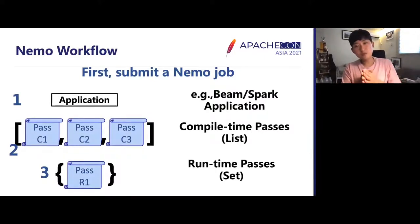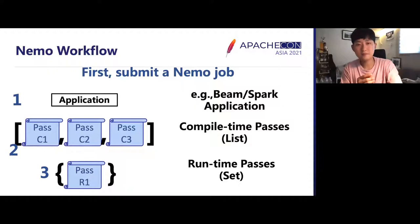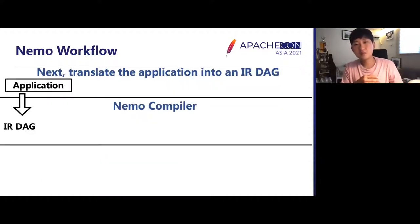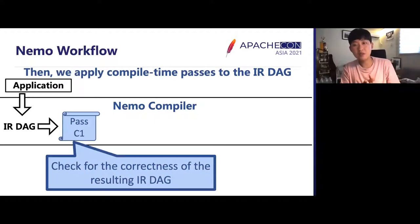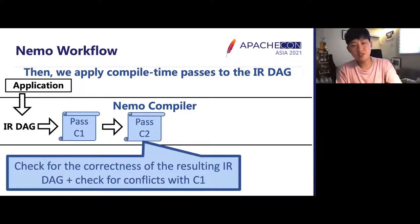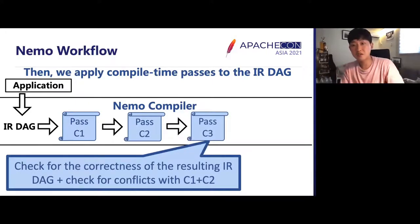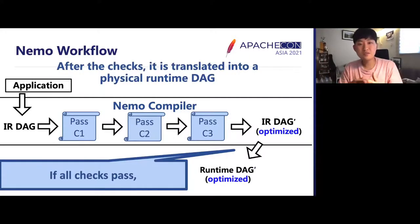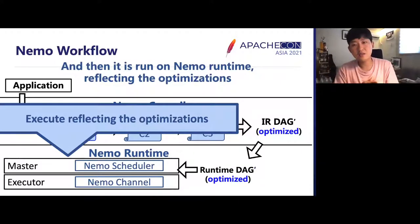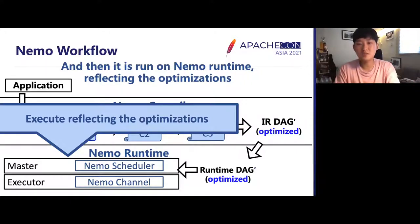A Nemo job requires a Beam or Spark application, a list of compile-time passes, and a set of runtime passes to optimize the application for a specific environment. The application is translated into an IR DAG — an intermediate representation directed acyclic graph — and on that IR DAG, different passes are applied while checking for correctness of the resulting IR DAG. Our sanity checker checks for conflicts and correctness of the optimized IR DAGs. If all checks pass, the optimized IR DAG gets transformed into a physical runtime DAG, which gets scheduled and executed on the Nemo runtime consisting of a master and multiple executors.